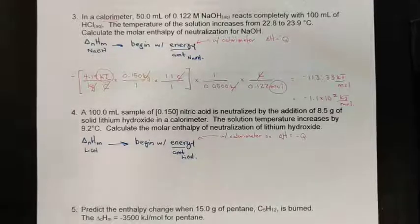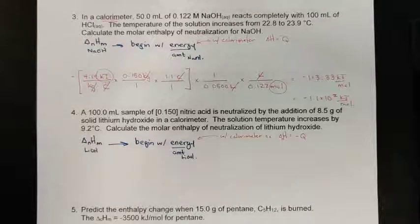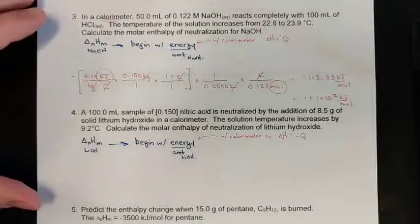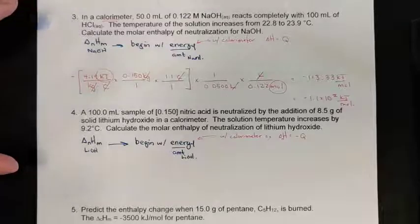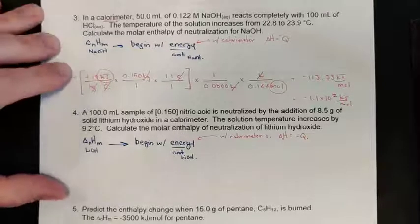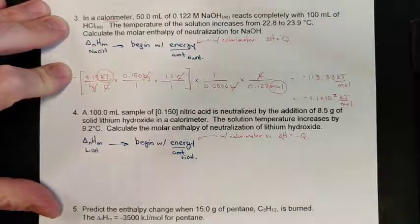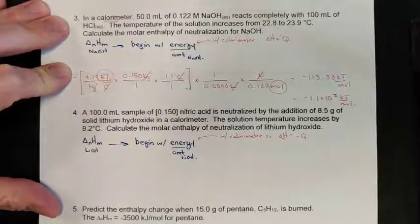Okay, last lesson for chapter 11.2 — this is lesson number six, just finishing off the examples here, dealing with our starting points according to the Lawrence method, and looking at whether you're solving for H_m, delta H, q, or a chemical amount.